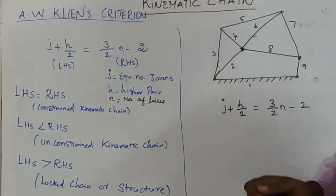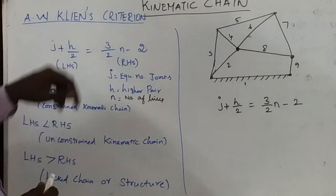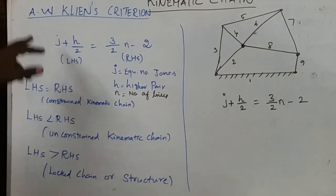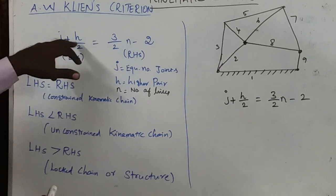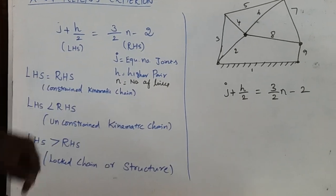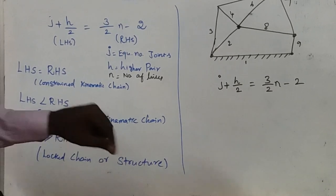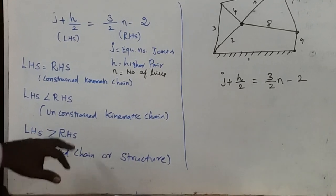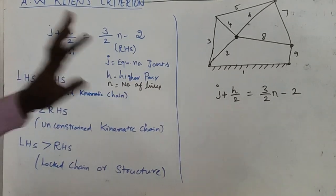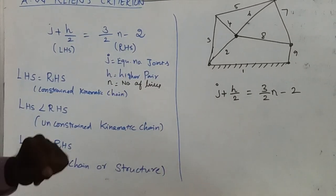The formula for Aw Cline's criterion is: J plus H divided by 2 is equal to 3 by 2 into N minus 2. Here LHS equal to RHS means constrained kinematic chain; LHS less than RHS means unconstrained kinematic chain; LHS greater than RHS means locked chain or structure. Here J is the number of joints, H is the higher pair, and N is the number of links.